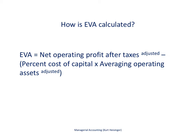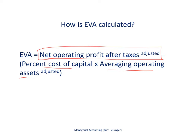Here's a summary of the equation related to Economic Value Added, and it looks much like calculating residual income. We take the net operating profit after taxes, but we make adjustments to those — not necessarily in accordance with GAAP. The company decides what types of adjustments to make. We take net operating profit after taxes adjusted and subtract from that the percent cost of capital times average operating assets, which is exactly the same as what we do for residual income. However, we can also make adjustments to the average operating assets.